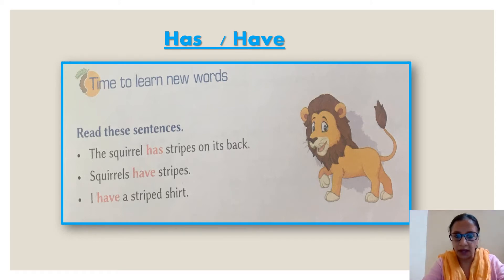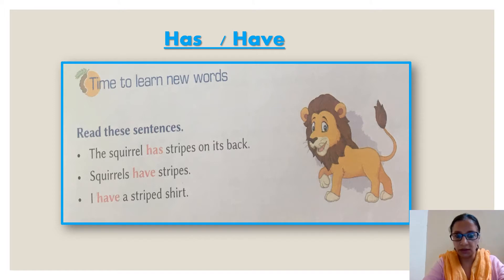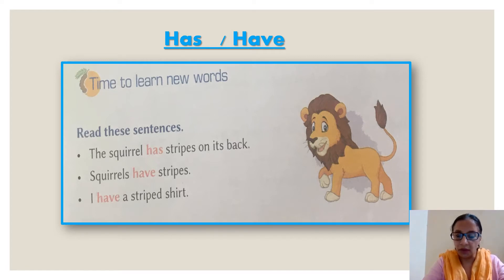The squirrel has stripes on its back. Second sentence: squirrels have stripes. Third sentence: I have a striped shirt. In these three sentences, which new words are being introduced? Has and have.